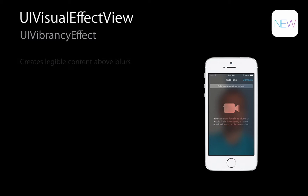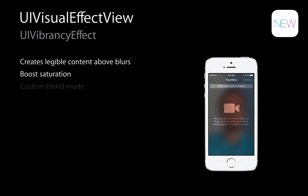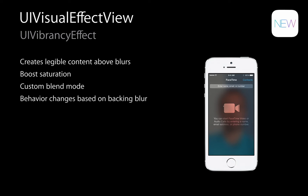Vibrancy effect is a technique for making legible content typically placed on top of a blur. We create this by first boosting the saturation of your content, then applying a custom blend mode to the vibrant content. The blend mode changes based on what kind of blur you plan to put the vibrant effect on top of. For that reason, you need to tell us what kind of blur you're using when you create a vibrancy effect.